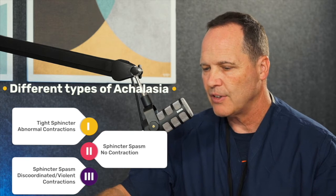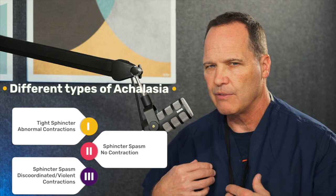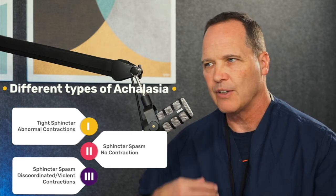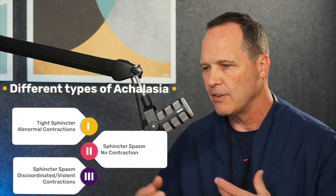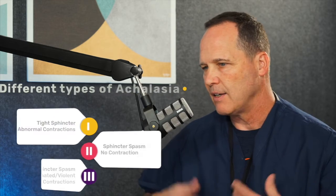Type 3 has the LES spasm plus discoordinated, almost violent contractions of the esophagus, which contribute to a lot of the symptoms like chest pain and difficulty swallowing. But all three respond to a surgical intervention on the lower esophageal sphincter.